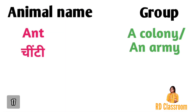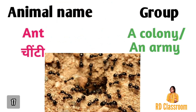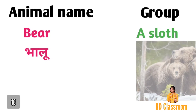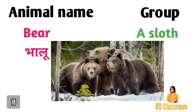Number seventeen is ant, ya fir chinti, jiske group ko a colony ya fir an army kaha jata hai. Number eighteen is bear, ya fir bhalu, jiske group ko kaha jata hai a sloth.